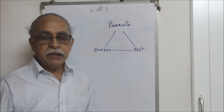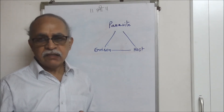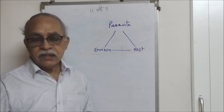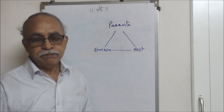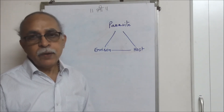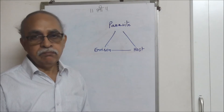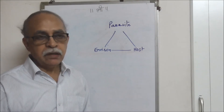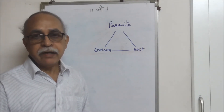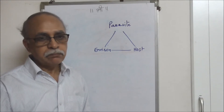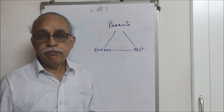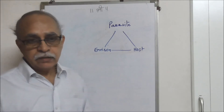Helminthic diseases could be ascariasis, filariasis, taeniasis, and so on. Fungal diseases — the commonest one could be ringworm, which basically affects the skin and is commonly called ringworm. That is the classification of diseases on the basis of parasites.